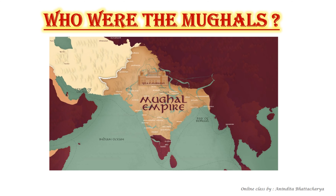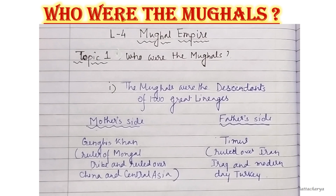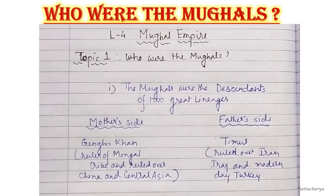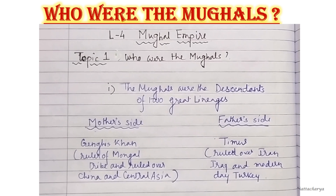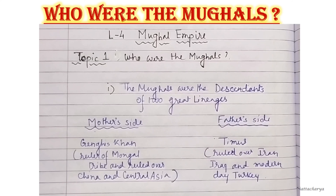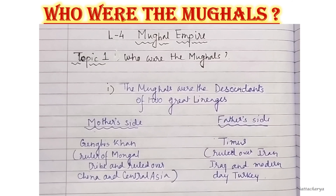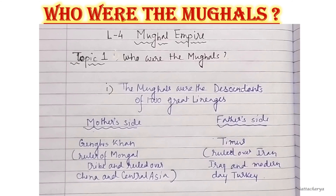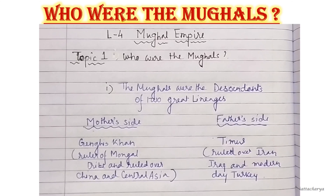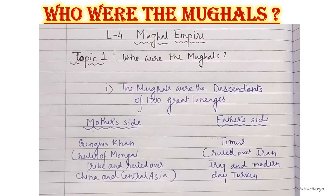Let's start with the first topic: who were the Mughals? The Mughals were the descendants of two great lineages. Descendants means a person who belongs to the same family as somebody who lived a long time ago, and lineage means a series of families that somebody comes from originally.